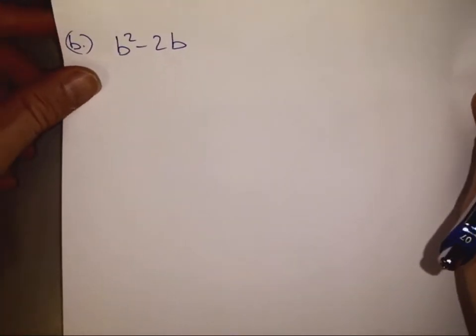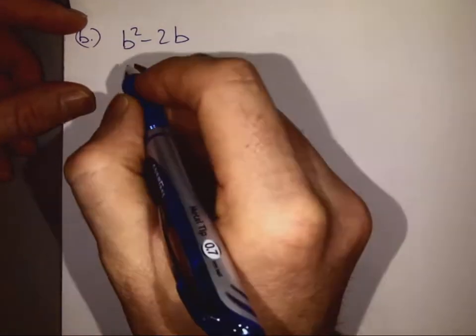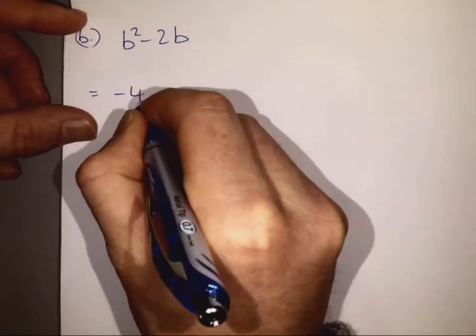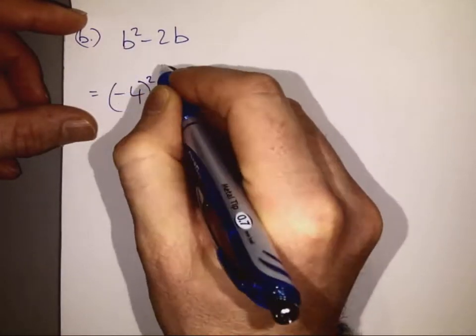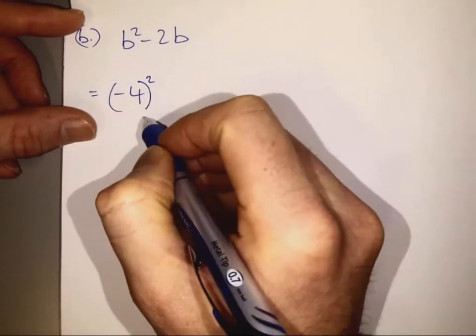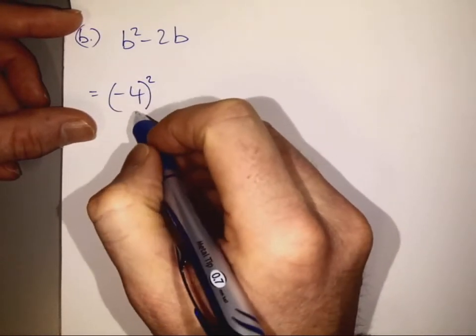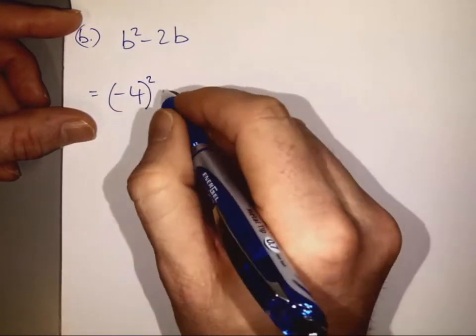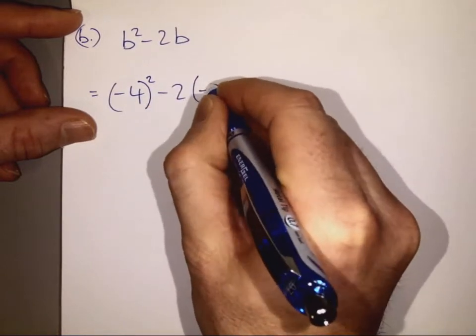So we are going to sub in minus 4, all squared like that. Be careful, we are going to get the minus inside the brackets, because we will be multiplying minus 4 by minus 4 now in a minute. Minus 2 times minus 4.